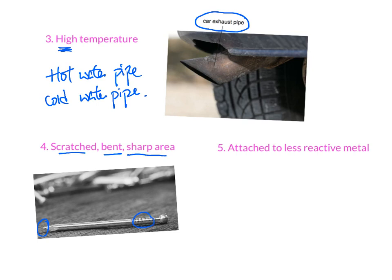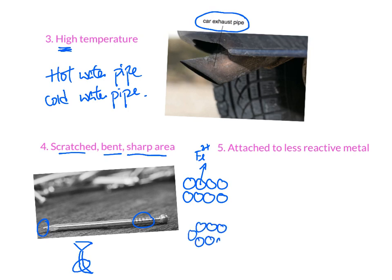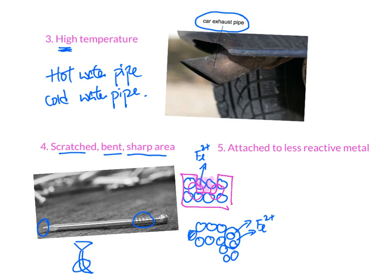Sharp, scratched, or bent areas of iron rust more easily. Imagine the atoms: when packed neatly, it is difficult for them to leave the group as Fe2+, so rust is less likely to form. But if the metal is bent or has a sharp point, the atoms in those areas are loosely packed and easily lost as Fe2+, so those areas rust first. A scratched surface also exposes fresh metal that rusts more easily.